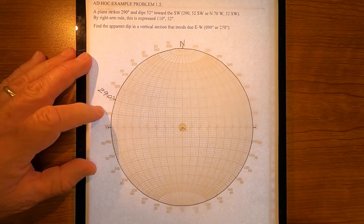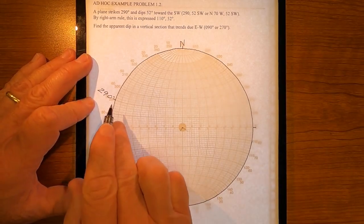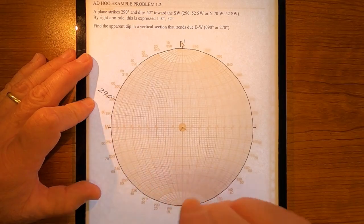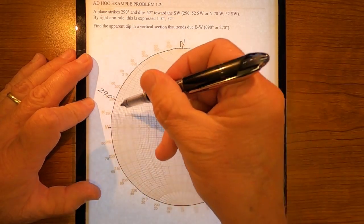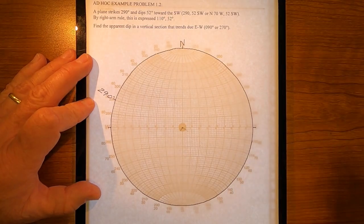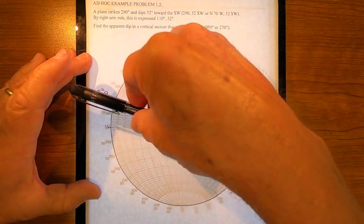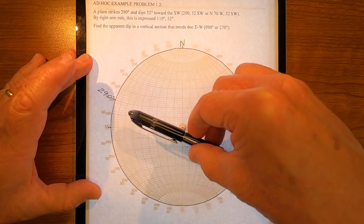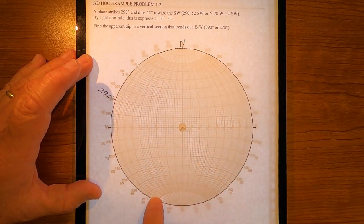I ought to visualize this. The strike is 290, it dips to the southwest, so it dips over here. The correct right arm rule expression is in fact 110, so that my right arm would be over toward the southwest.